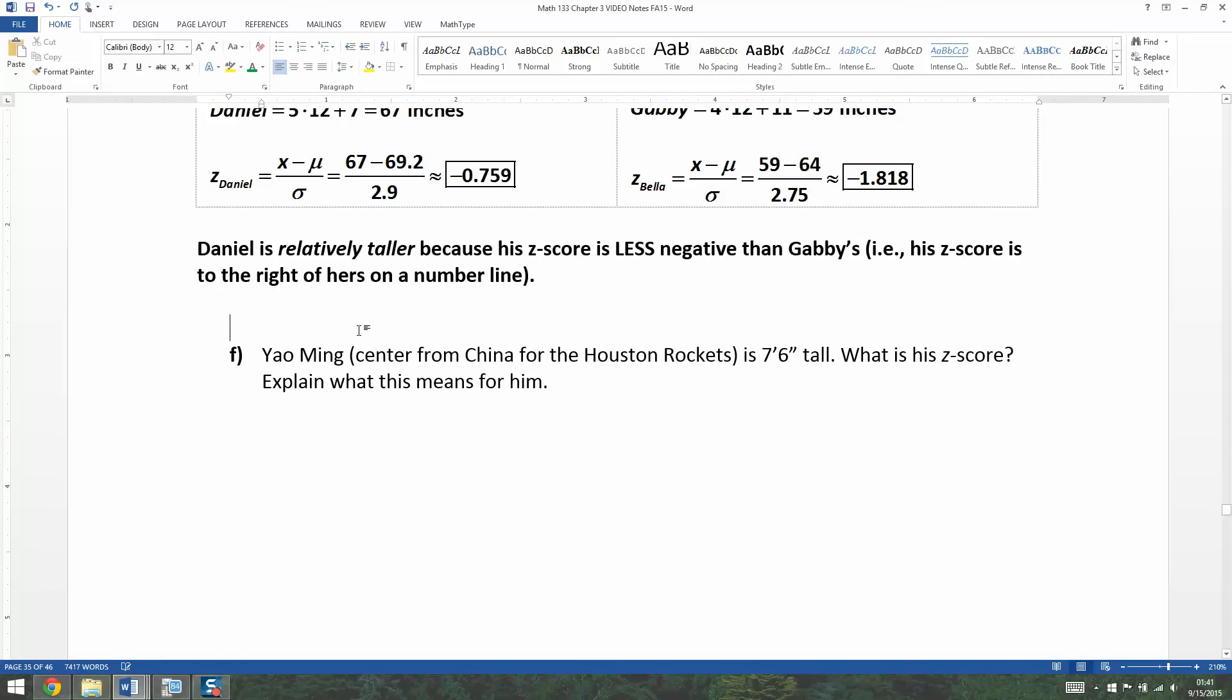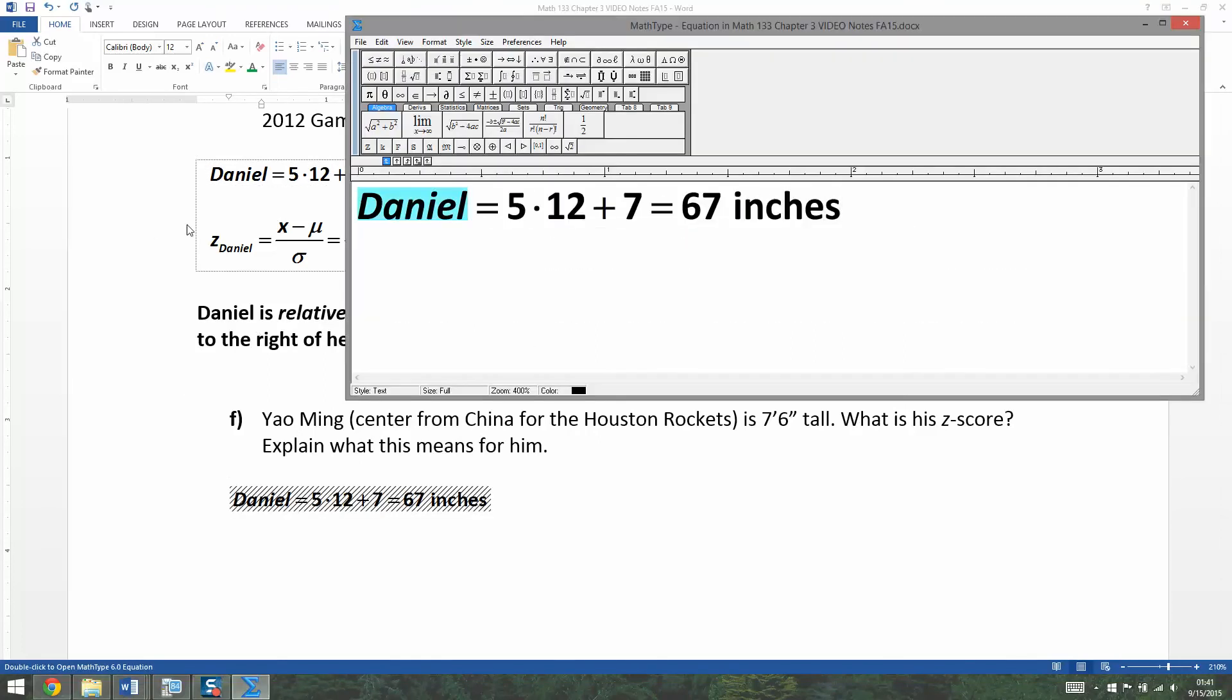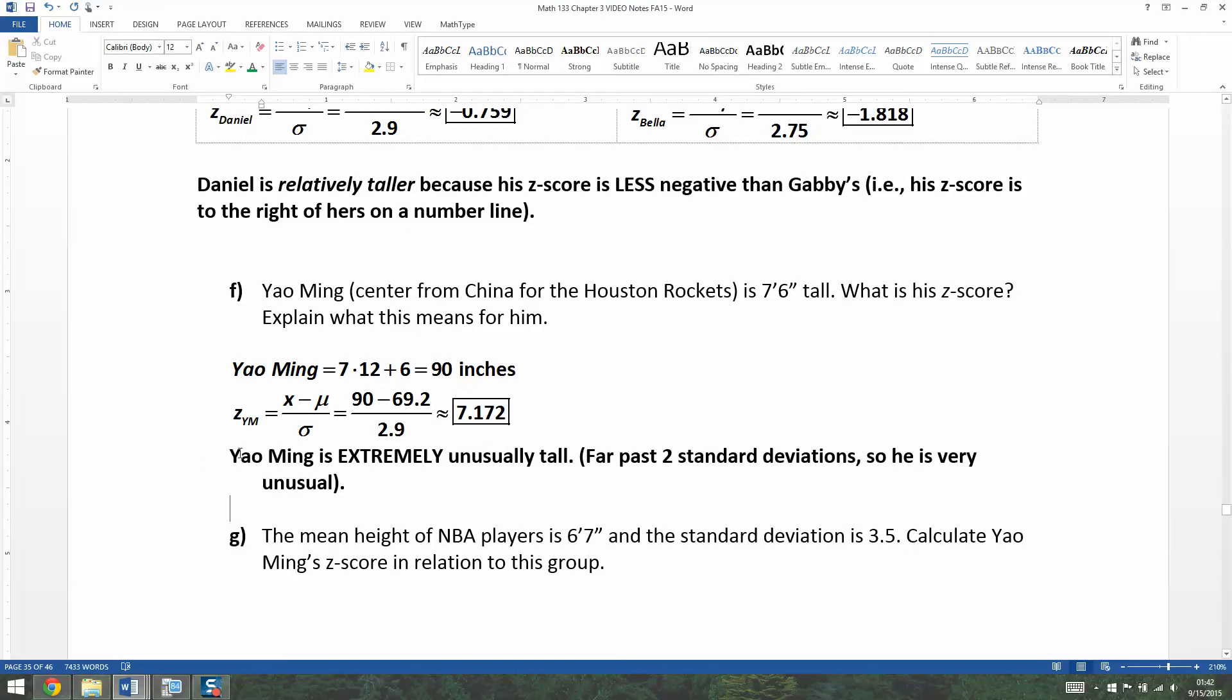Now, what about Yao Ming? Yao Ming was the center from China for the Houston Rockets, and he was seven feet six inches tall. Well, there's a lot of inches, so we need to figure out first how tall that is. Yao Ming, he is 7 times 12 plus 6, which is 90 inches tall. Quite tall. Now we need to find his Z-score and then explain what that means for him.